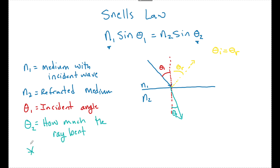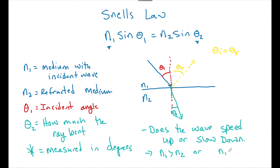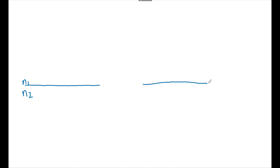All of our angles are measured in degrees. On a test like the SAT, which does not allow calculators, you won't really have to solve for angles. But you will have to identify when a wave is speeding up or slowing down, because this bend is determined by how much a wave changes speed. This will tell us if N1 is greater than N2, or if N1 is less than N2.